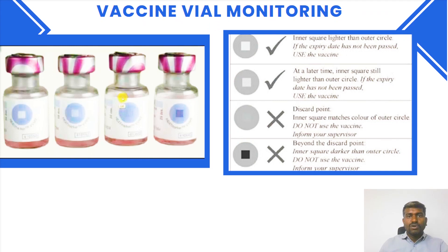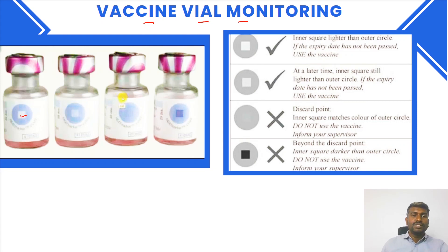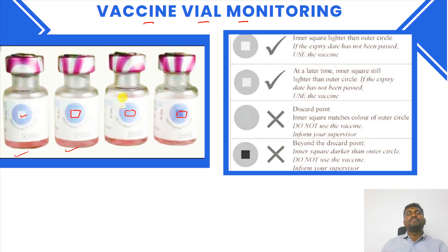Now let's talk about vaccine vial monitoring. We have to look at the inner circle. If the inner circle is lighter than the outer circle, then you are going to use the vaccine. If it is darker than the outer circle, you are going to discard it. So the first two vaccines can be used, whereas the last two cannot be used.